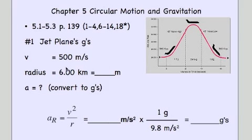The velocity is 500 meters per second, radius is six kilometers. Remember we need to convert to SI units - we'll need to get that to meters. Acceleration radial is v squared divided by r.